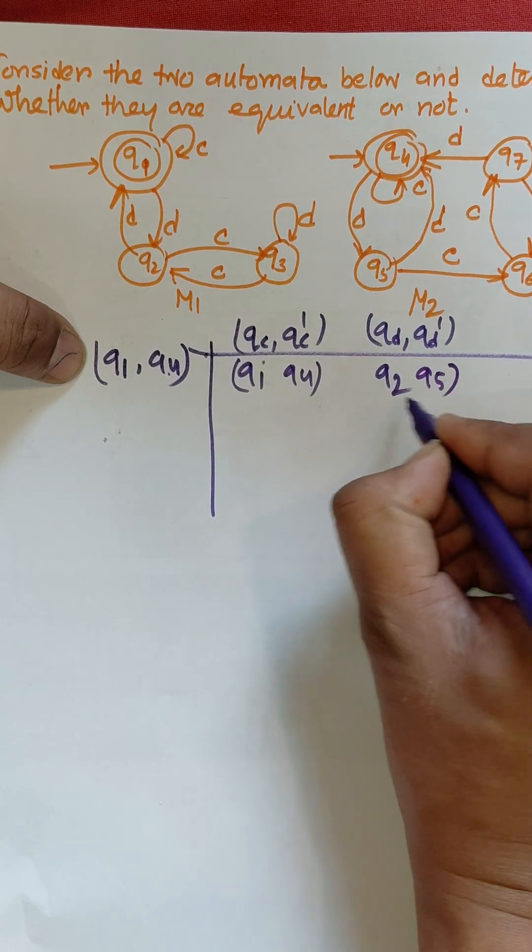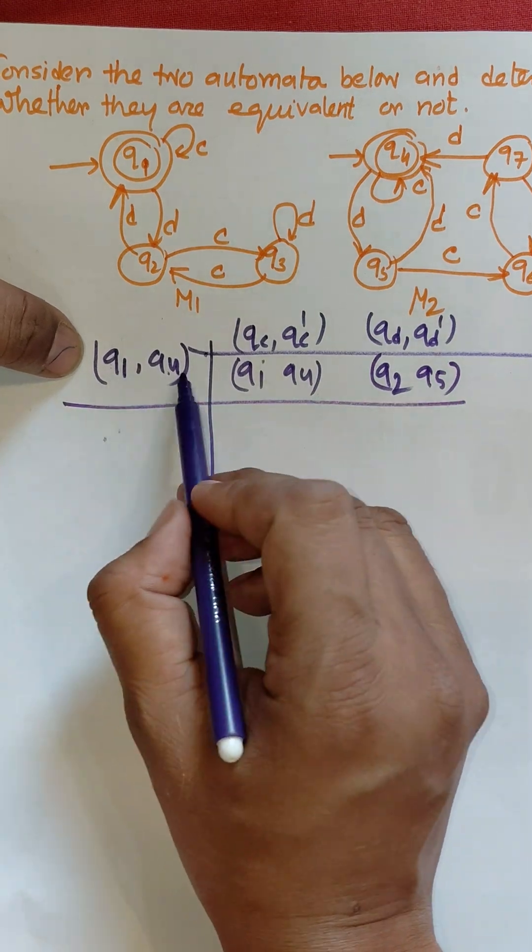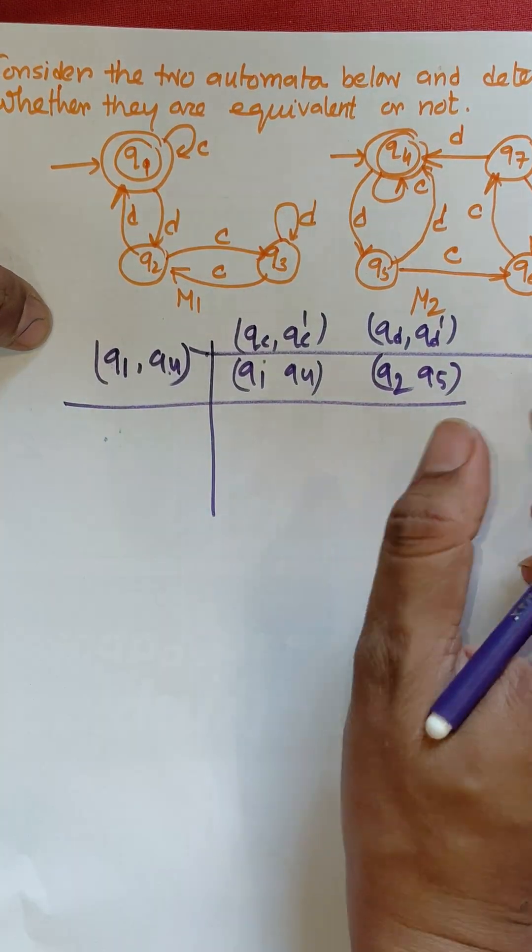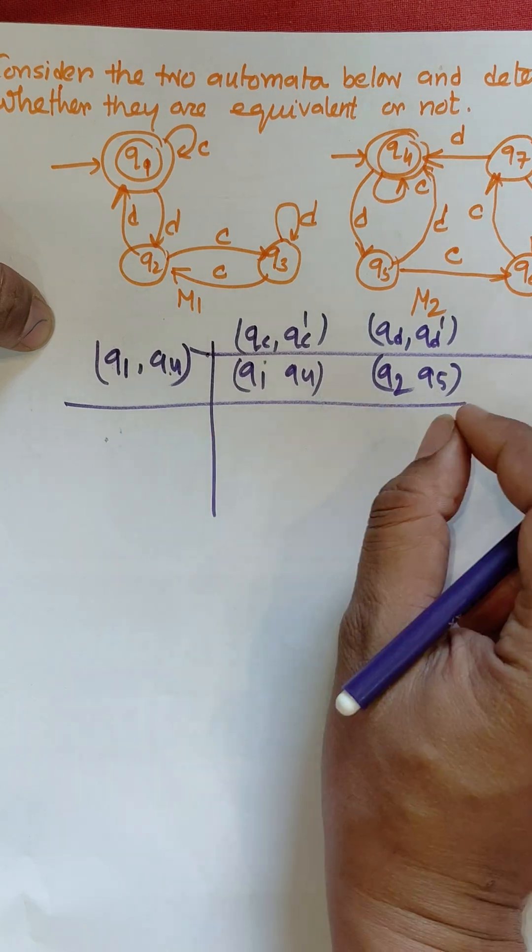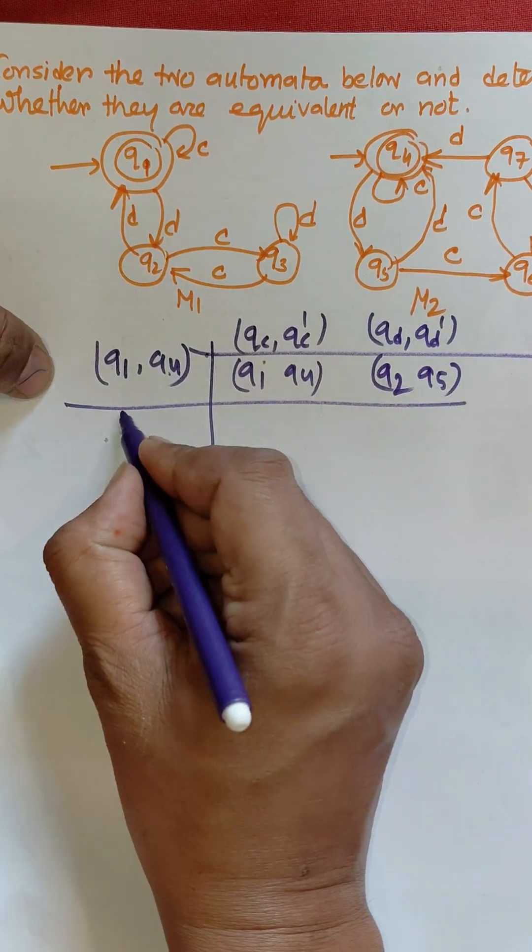If both are final and non-final, there is no problem. If one of them is final and this is non-final, then they are not equivalent. Now we need to write q2, q5 as this one is the new state.